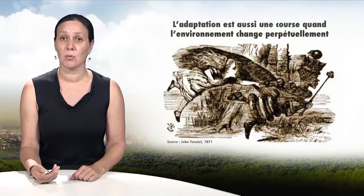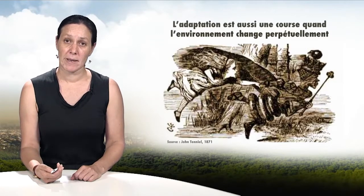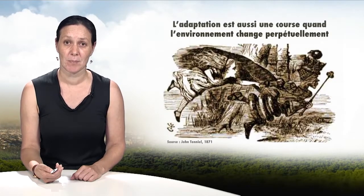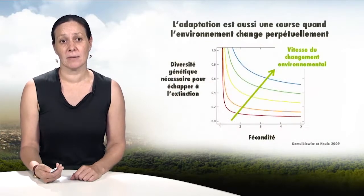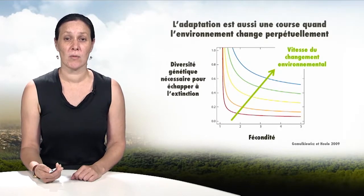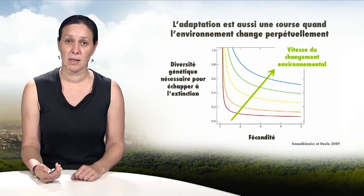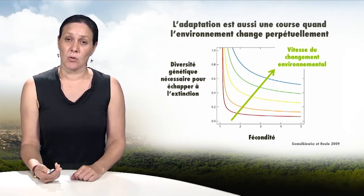The increase in temperatures correlated with climate change means species face other adaptive challenges. In order to persist locally, a population must adapt permanently to a perpetually changing environment — like Alice in Wonderland, who needs to run to stay in the same place. A population must therefore evolve quickly, and the speed of evolution depends on its genetic diversity. One can define a critical genetic diversity below which the population will become extinct because it is unable to adapt fast enough.